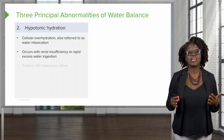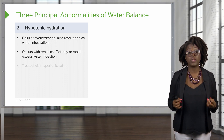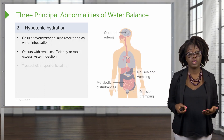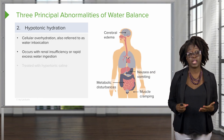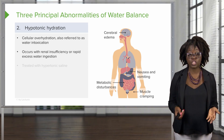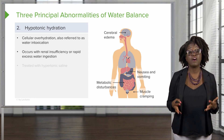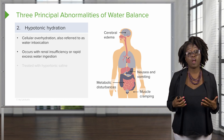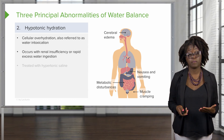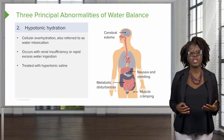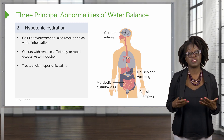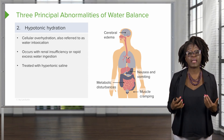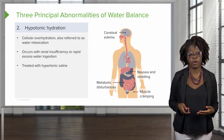This results in a net osmosis of water into our tissue cells, causing our cells to swell. Symptoms of hypotonic hydration include severe metabolic disturbances, nausea, vomiting, muscular cramping, cerebral edema, and possibly death. This is treated by administering a hypertonic saline solution, which will pull the fluid back out of the cells toward the extracellular fluid compartment.